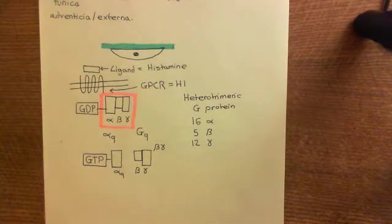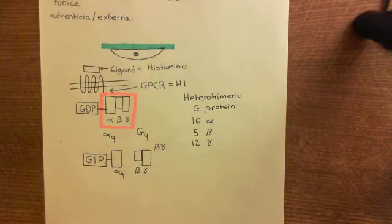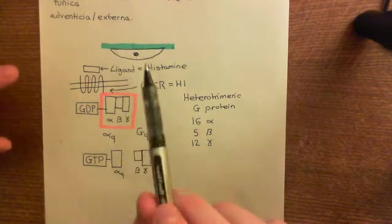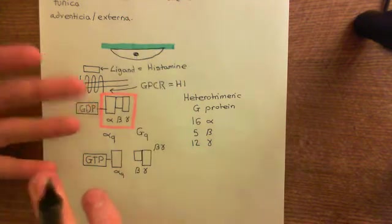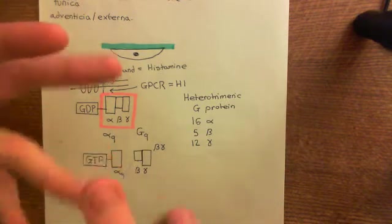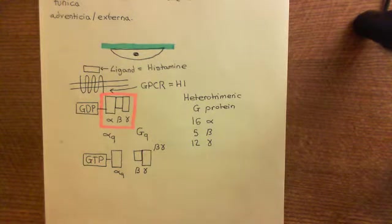Welcome to this next video in which we're discussing type 1 activation of endothelial cells. We've discussed that histamine is going to bind to the histamine 1 receptor on the basal lateral side of endothelial cells. This is going to happen in arterioles — at least terminal arterioles — in capillaries, and in venules. So it's happening in all three types of blood vessels within our tissue.